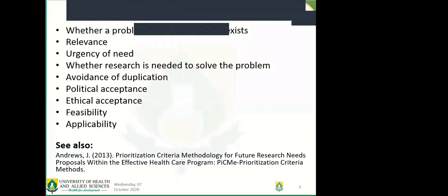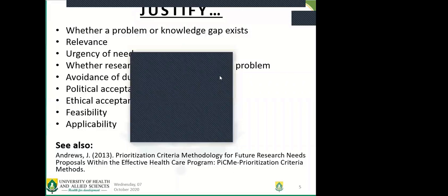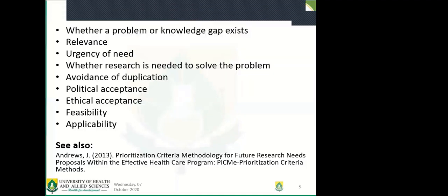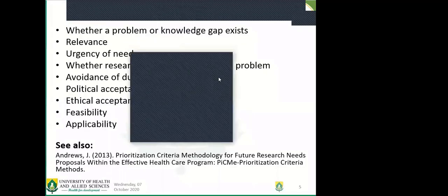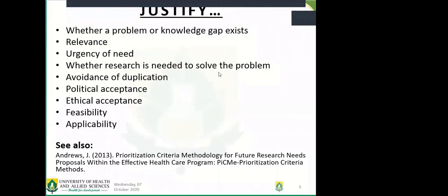You must justify whether research is needed to solve that particular problem, and prove that you are not duplicating anybody's work. Political acceptance is also key — you want your research to be implemented. What kind of study are you doing? Is it something that policymakers should be interested in? If policymakers are interested in your topic, you can be sure it will be accepted. Your research must also be ethically conducted, especially when using human subjects.